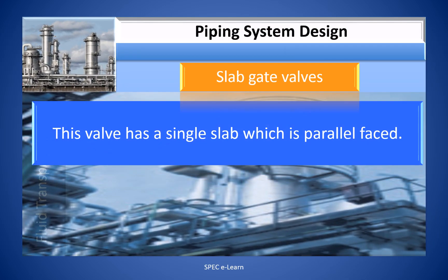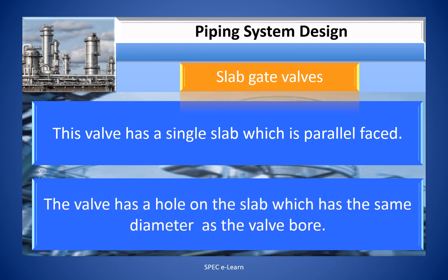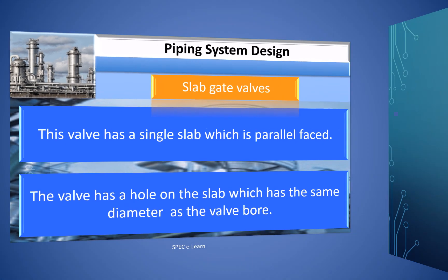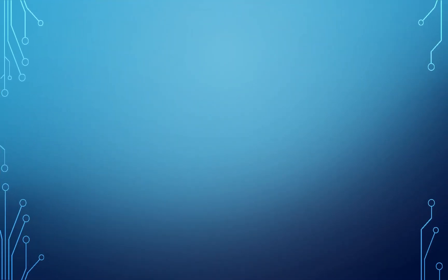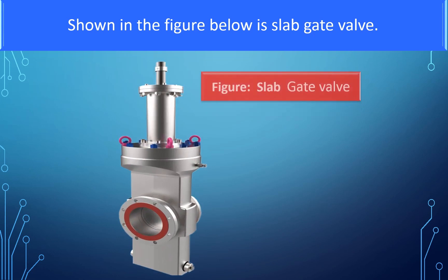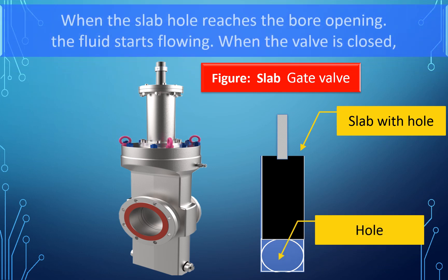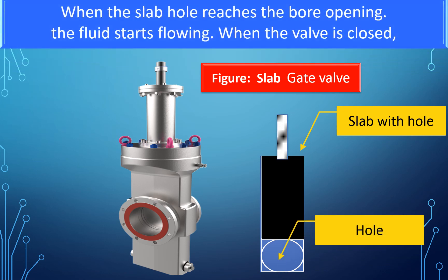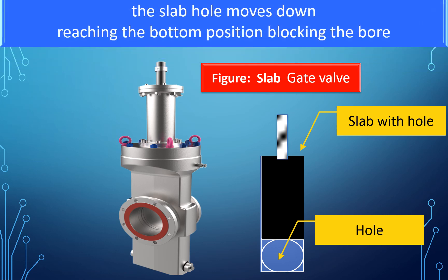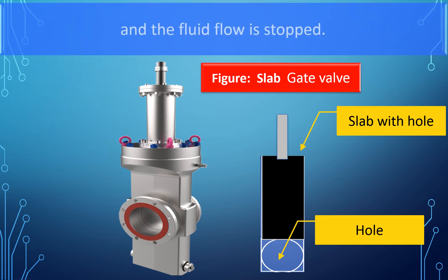The slab gate valve has a single slab which is parallel-faced. The valve has a hole on the slab which has the same diameter as the valve bore. As the valve is opened, the slab gate moves up from the closed position. When the slab hole reaches the bore opening, the fluid starts flowing. When the valve is closed, the slab hole moves down, reaching the bottom position and blocking the bore, stopping the flow.